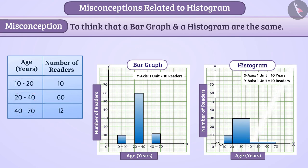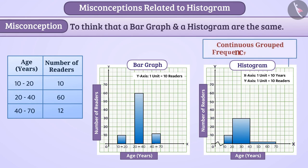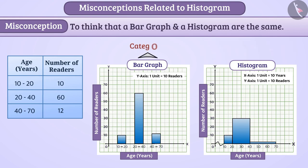Histograms are created for continuous group frequency distribution. So, there is no gap between rectangles. Bar graphs are drawn to compare different categories while histograms are drawn to understand the distribution of data.